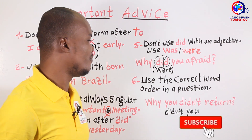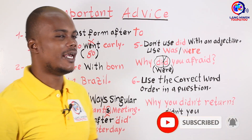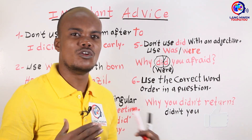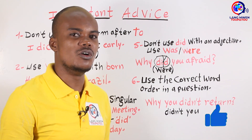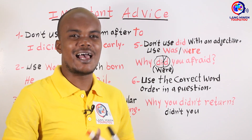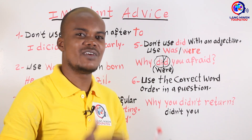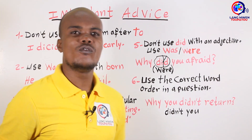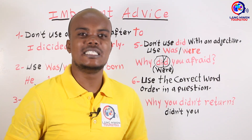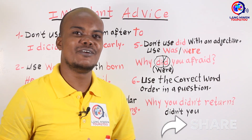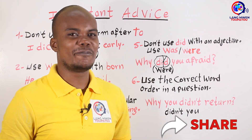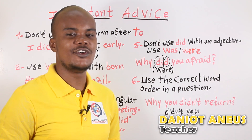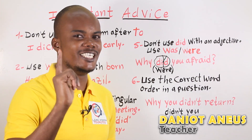Advice number six — to finish: use the correct word order in a question. When you pose a question, don't pose it the same way as an affirmative sentence — you should invert the subject and the auxiliary. Good. Thank you for watching. Share this video if you appreciated it, let me know in the comments, and we'll continue learning English together. I love you so much. My name is Daniel. Catch you for a better video. Bye.